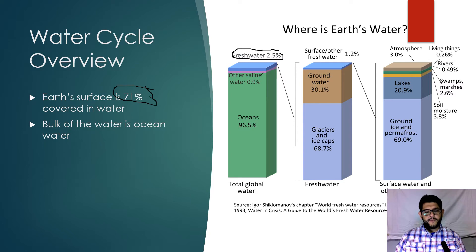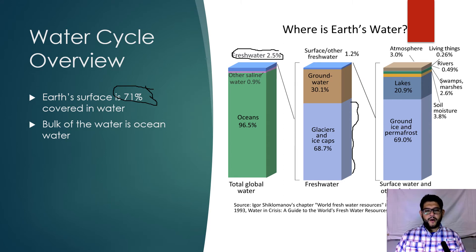There's also about 1% as other saline amounts, which leaves us with about 2.5% of fresh water. The fresh water itself is not very accessible either. Glaciers and ice caps account for about 68–69% of our fresh water, then groundwater is about 30%, and surface water itself is only about 1%.